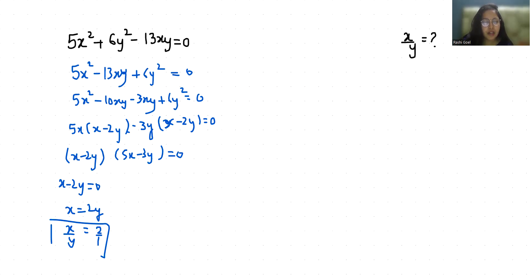Now 5x minus 3y equals 0. 5x equals 3y and if I divide by 5, x equals 3y/5 and x/y equals 3/5.